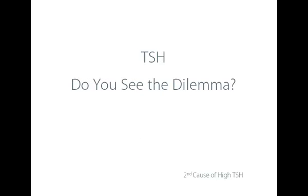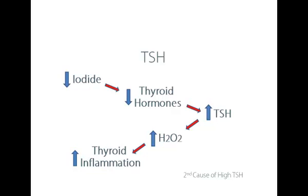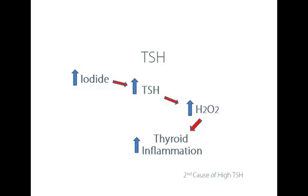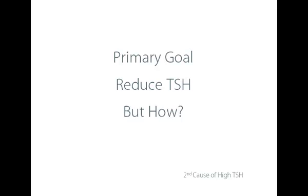So there's a dilemma. When a person has low levels of iodide, their thyroid hormones decline, TSH goes up, increasing hydrogen peroxide production and thyroid inflammation. On the other side, we also know that increased iodide will increase TSH levels — again increasing hydrogen peroxide and thyroid inflammation. Either way, TSH rises and drives inflammation.